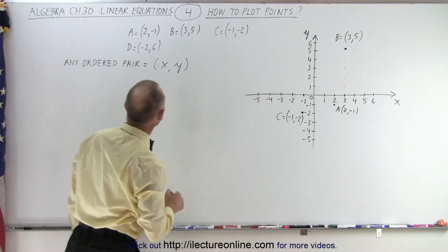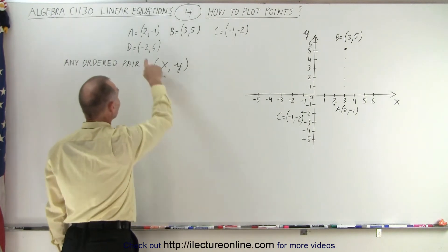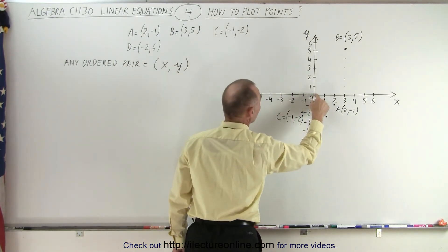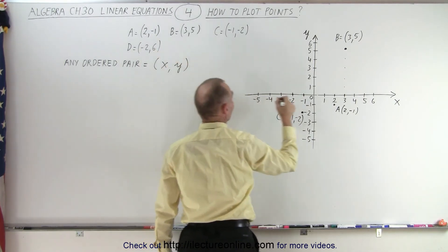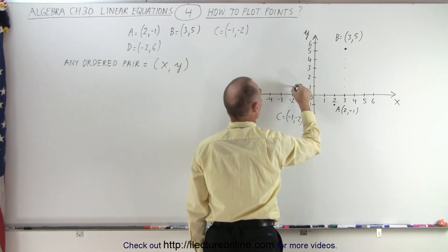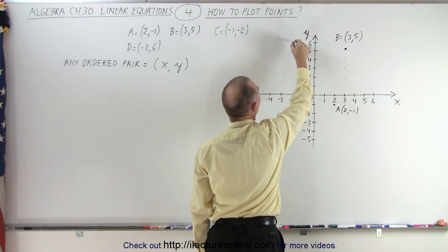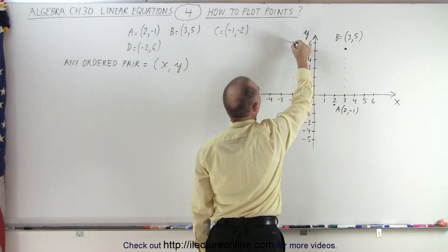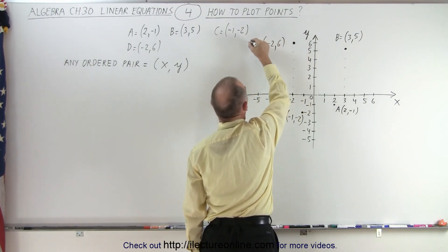And finally, we have point D. Again, we start with x-value. The x-value is negative 2, so we go two units to the left. 1, 2. So there's x equals negative 2. Now since y is a positive 6, we go up 6 units. So 1, 2, 3, 4, 5, 6. There we go. There's the point negative 2, 6. And that is point D.